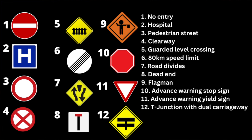Number seven is the start of an obstruction or where the road divides. Number eight is a dead end — a cul-de-sac or no through road. Number nine is a flagman — a flagman or manual traffic controls ahead. Number ten is an advanced warning of a stop sign up ahead. Number eleven is an advanced warning of a yield sign up ahead — advanced warning of a yield junction.